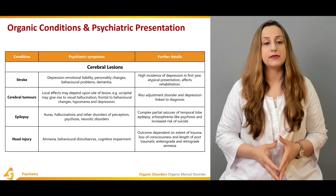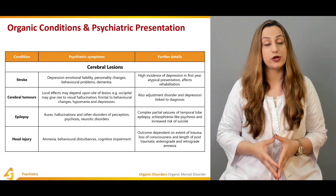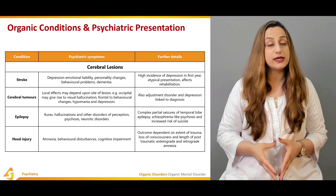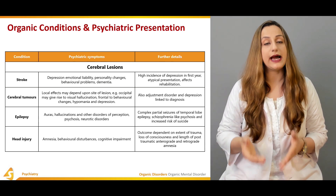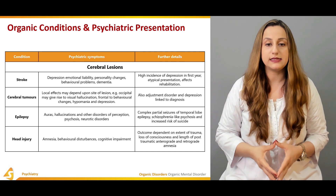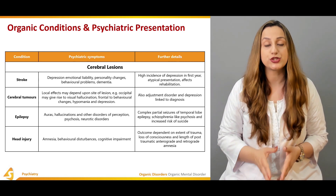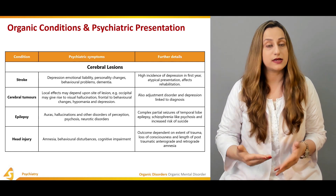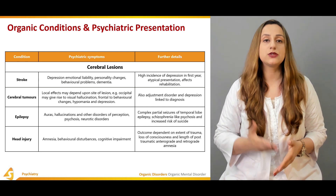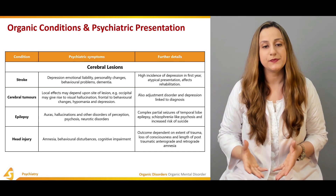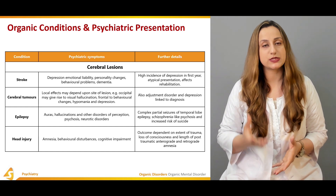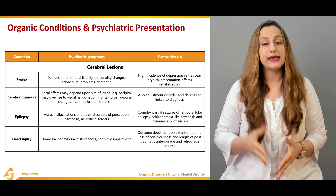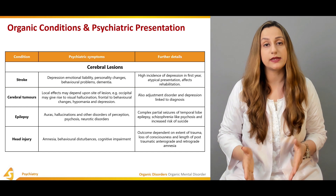Cerebral tumors are another leading cause; local effects depend upon the site of the lesion — for example, occipital lesions may give rise to visual hallucinations, and frontal lesions to behavioral changes, hypomania, and depression. Adjustment disorders and depression linked to diagnosis are also important. Epilepsy is another common cause, presenting with auras, hallucinations, disorders of perception, psychosis, and neurotic disorders, including complex partial seizures of temporal lobe epilepsy, schizophrenia-like psychosis, and increased risk of suicide.